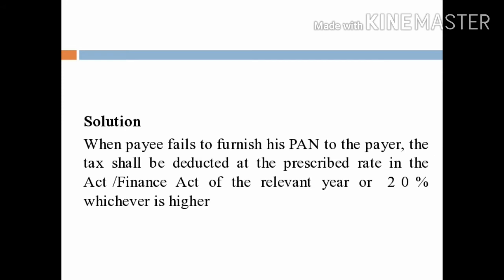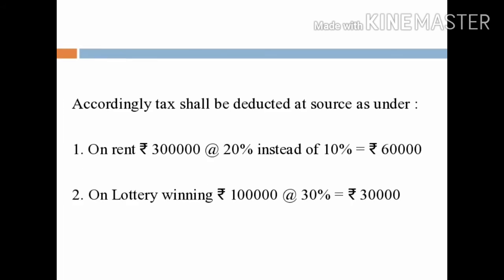The two rates — the prescribed rate in the Act or Finance Act of the relevant year, and 20% — are compared, and the higher rate will be applied to the tax deducted at source. Accordingly, tax shall be deducted at source as follows.